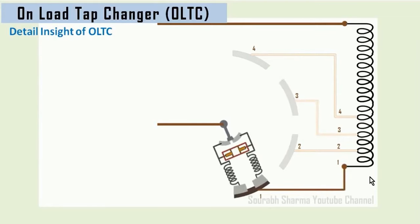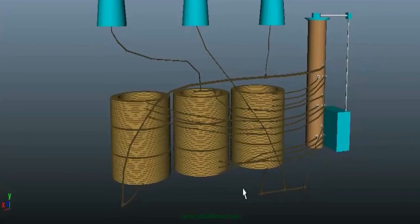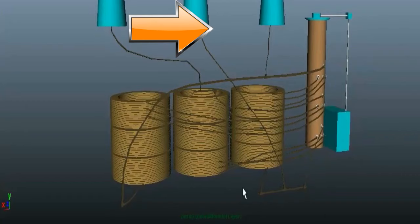But this represents only one winding of the HV side. As high-rating transformers are of the 3-phase type and consist of 3 HV windings, an OLTC has 3 such assemblies within it, and all the arms are coupled through a common shaft. Now to understand the connection of OLTC, you have to go through another video, which is again a very important topic.